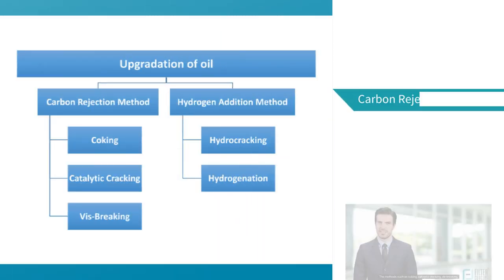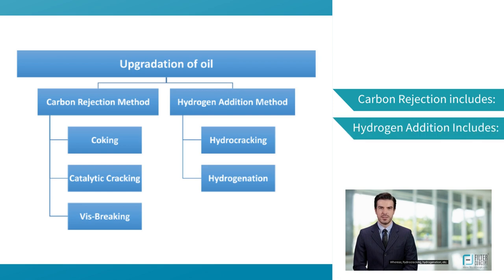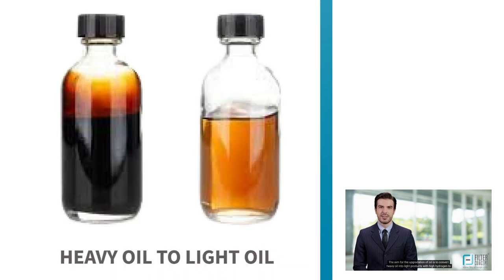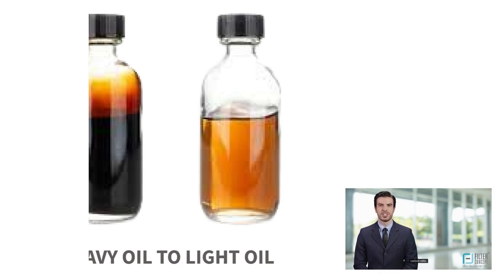Methods such as coking, catalytic cracking, vis-breaking, etc. come under the carbon rejection methodology. Whereas hydrocracking, hydrogenation, etc. are hydrogen addition processes. The aim of oil upgradation is to convert heavy oil into light products with a high hydrogen-to-carbon ratio.